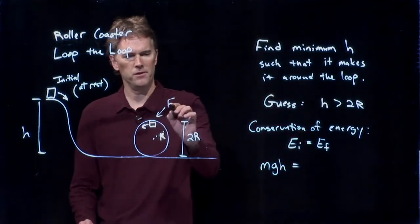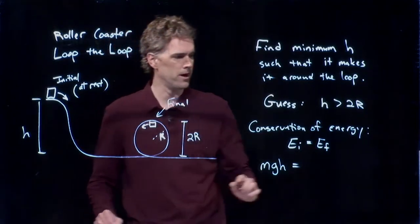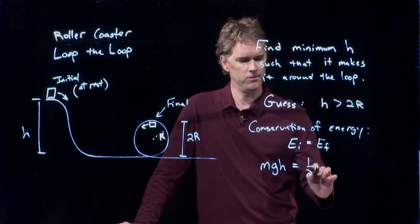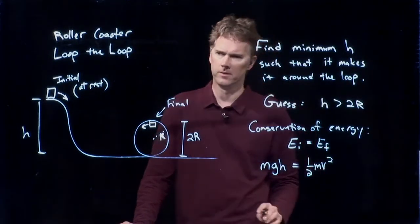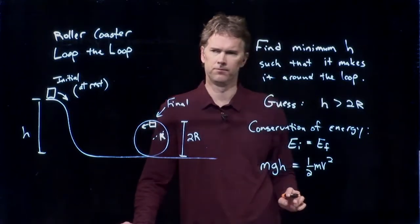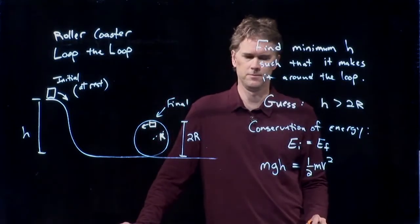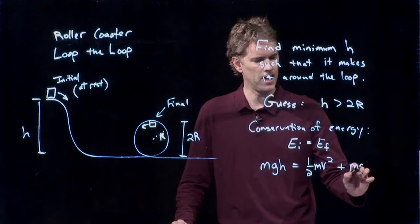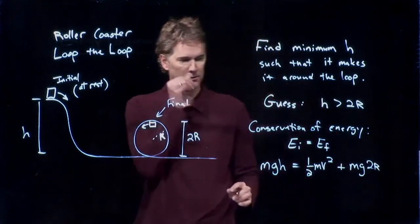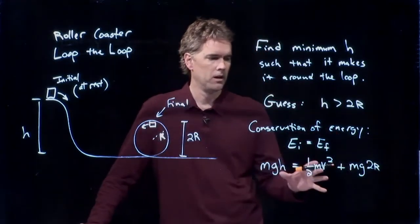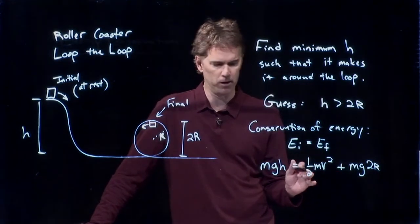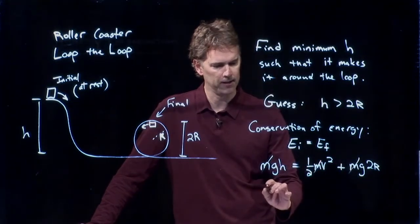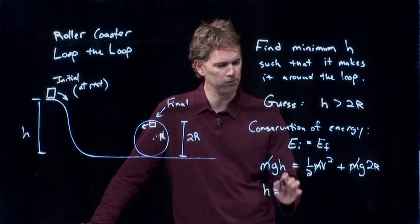Now, in this final position here, what do I have? One-half mv squared. One-half mv squared because I'm moving. Anything else? And there is still potential energy, right? Because we are up here at height 2r. And so we have to include that. Okay. And so that looks like a nice equation. And we can simplify this quite a bit and solve it for h. Cross out all the m's.